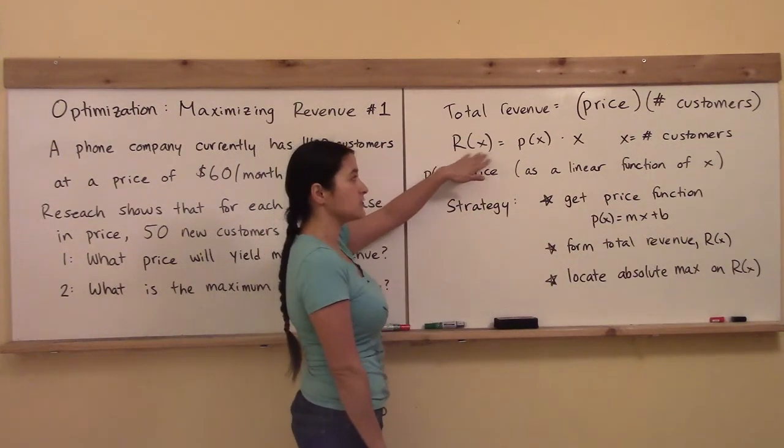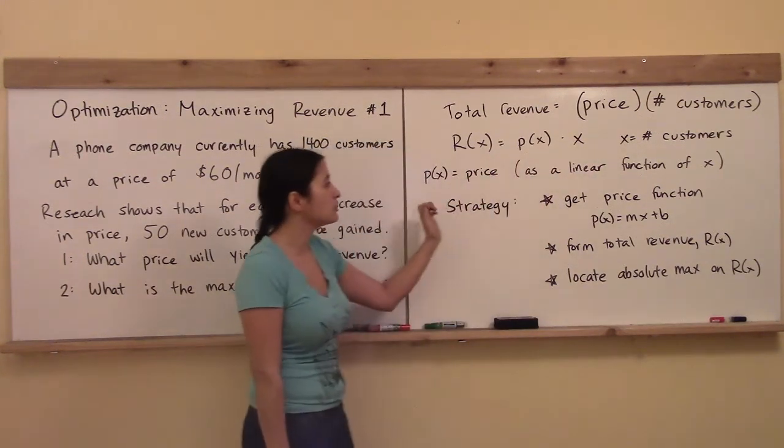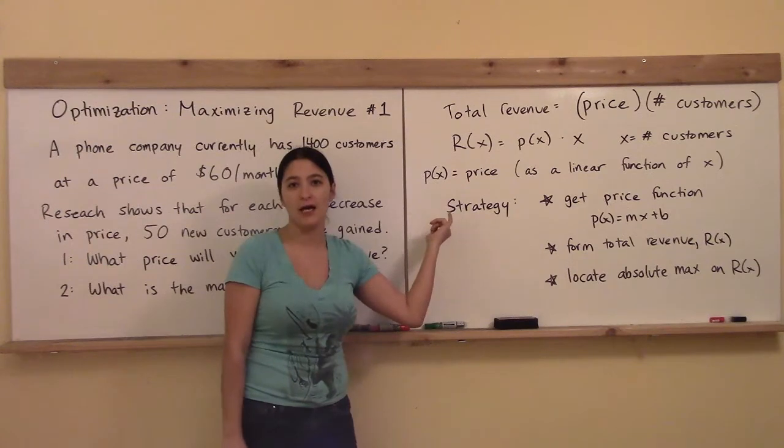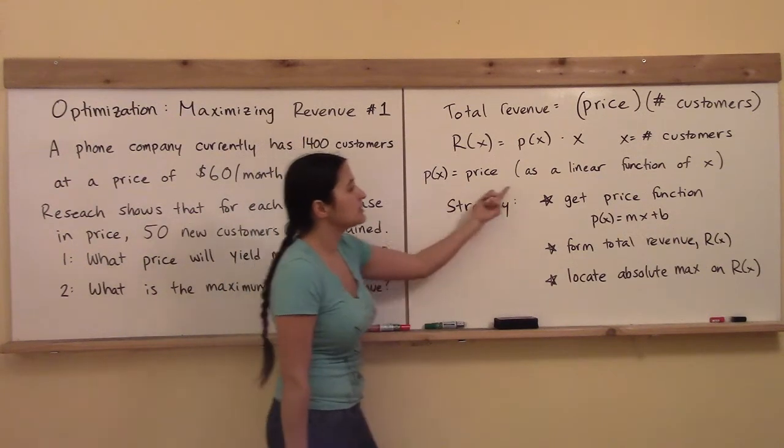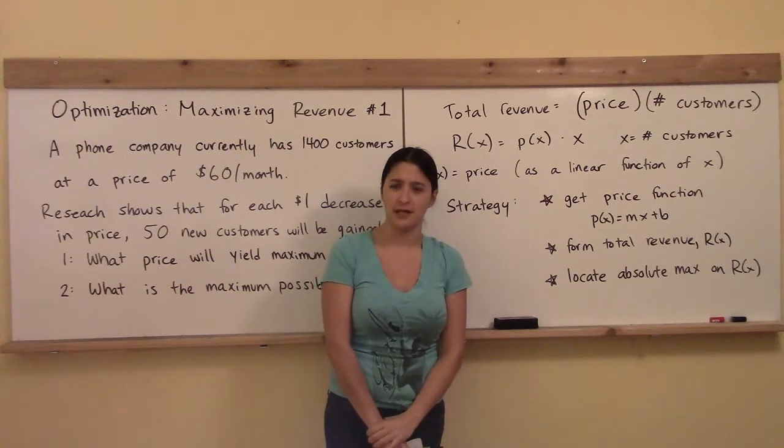So mathematically, R(x) is equal to P(x) times x, where x is the number of customers, and P(x) is the price. I write it of x because it's a linear function of x. How do I know it's a linear function of x?